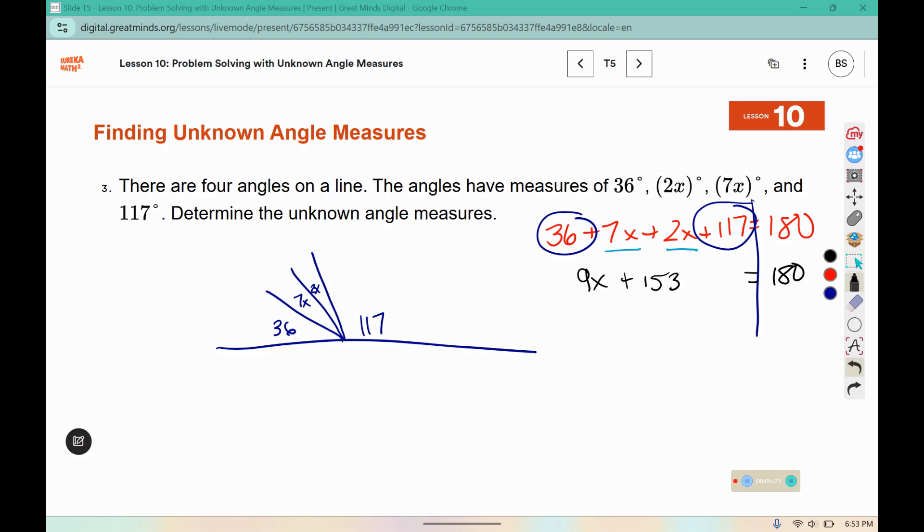And we need to subtract that from both sides. 10 minus 3 is 7, 7 minus 5 is 2, 1 minus 1 is nothing. Divide by 9, and x equals 3.